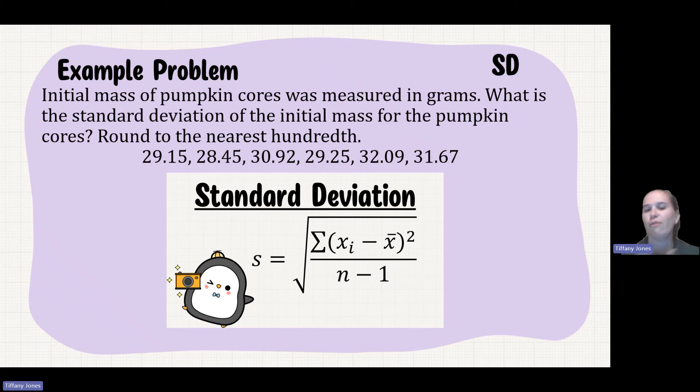So they'll either say round to the nearest whole number, so that would be the number without a decimal. They can say to the tenths, which would mean that we have one number past that decimal place. Hundredths would be two decimal places past, and thousandths would be three decimal places past.